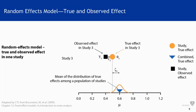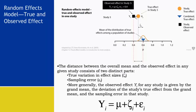Instead of having only the within-study error, the observed effect in study three, y3, can now be written as mu plus zeta three plus epsilon three — that is, the grand mean of the distribution of true effects among a population of studies, plus zeta three which is the deviation of the true effect in study three from the overall mean, plus the within-study error term epsilon three.